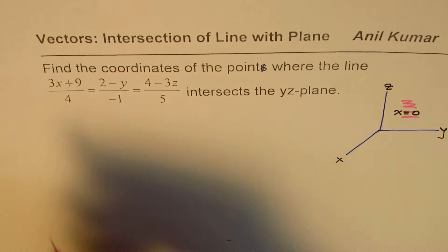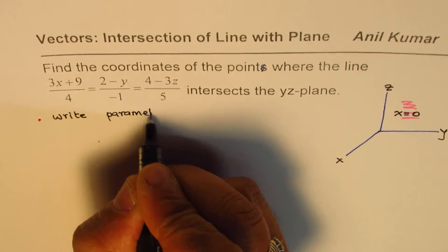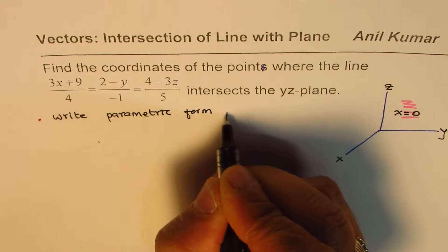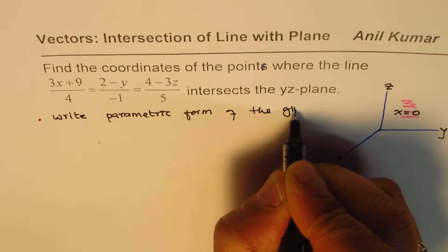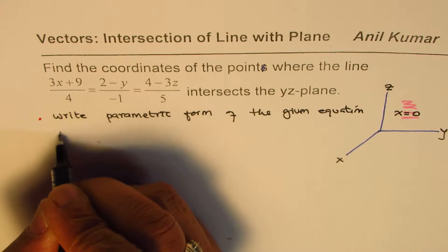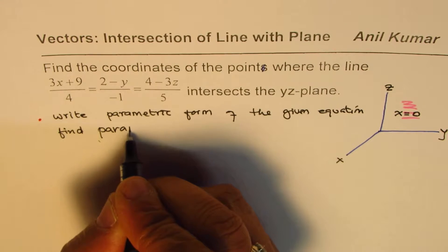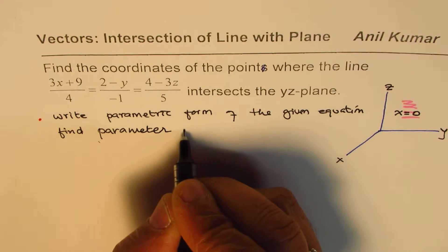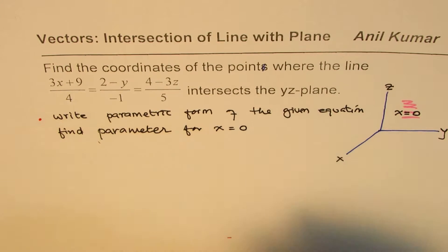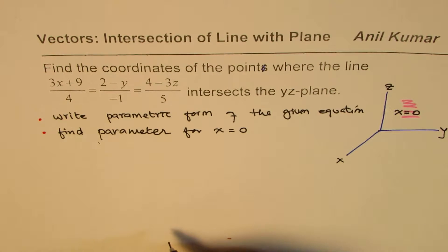That's the strategy. We'll do it in two steps. One is we'll write parametric form of the given equation and second we'll find or calculate parameter for x equals to 0. These are the steps involved. I hope now with these steps you should be in a position to solve the question. You can pause the video, answer, and then look into my suggestion.